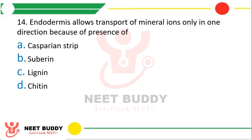Question 14: Endodermis allows transport of mineral ions only in one direction because of the presence of — option A: Casparian strip, option B: suberin, option C: lignin, option D: chitin. The correct answer is option B, suberin. Endodermis contains suberin, because of which active transport of ions can occur only in one direction.